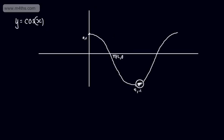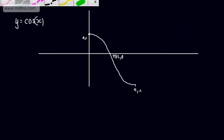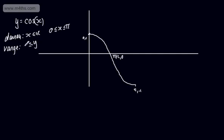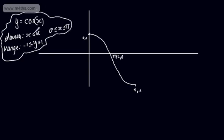With the restricted domain, y equals cos x has domain x is a real number between 0 and pi radians. The range is y between minus 1 and positive 1. So y equals cos x with this restricted domain becomes a 1 to 1 function.